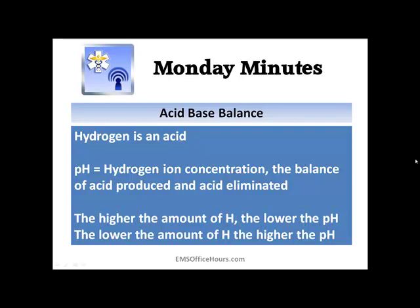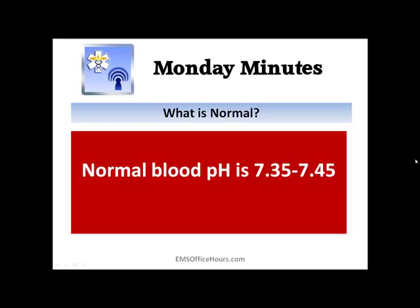I made this a separate point because you will see this on a test. You're not going to be documenting blood pH on your ePCR, but you will see it on an exam — normal blood pH is 7.35 to 7.45. Now, how do we maintain pH? There are three systems.